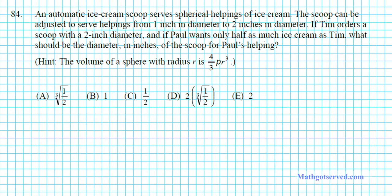Let's take a look at problem 84. It says an automatic ice cream scoop serves spherical helpings of ice cream. The scoop can be adjusted to serve helpings from one inch in diameter to two inches in diameter. Basically, you can alter the volume of the scoop by altering the diameter. It says, if Tim orders a scoop with a two-inch diameter, and Paul wants only half as much ice cream as Tim, what should be the diameter in inches of the scoop for Paul's helping?